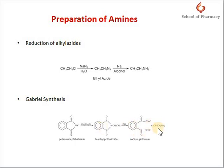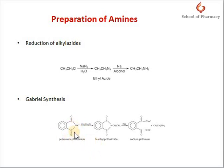Why is a mixture not formed in Gabriel synthesis? Because in phthalimide there is only one replaceable hydrogen attached to the nitrogen. When potassium phthalimide reacts with the alkyl halide, it forms the N-alkyl phthalimide, which on hydrolysis gives the primary amine only.